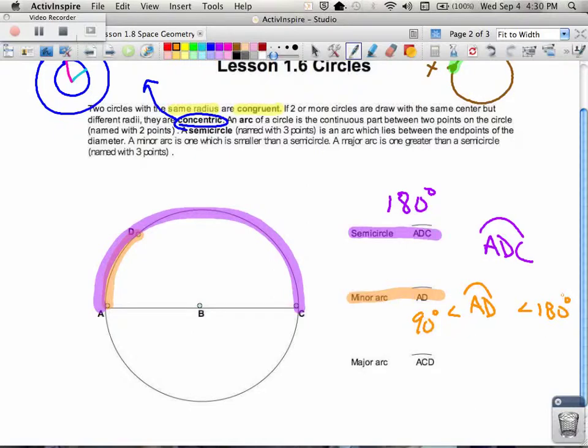And then you have a major arc, and the major arc is one that is more than 180 degrees. So a major arc in this case is ACD. That's this arc right here, A to C to D all the way over to D.